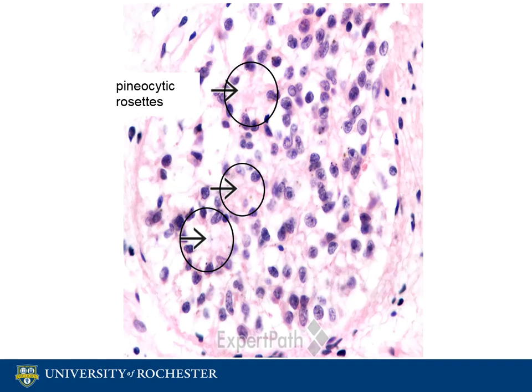They are arranged in pineocytic rosettes. These cells are responsible for secreting melatonin. Pinealocytes communicate with the hypothalamus to control the circadian cycle.